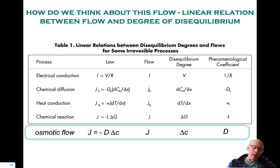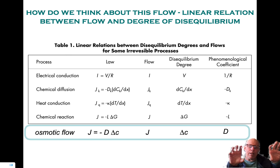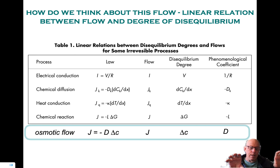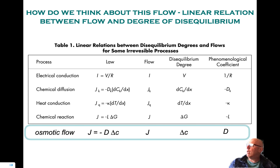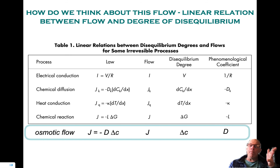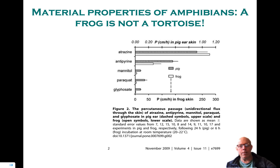For osmotic flows, if I have a gradient of concentration across a membrane — delta c — then the corresponding flux is proportional to that delta c, and the permeability is the coefficient that links those two quantities.